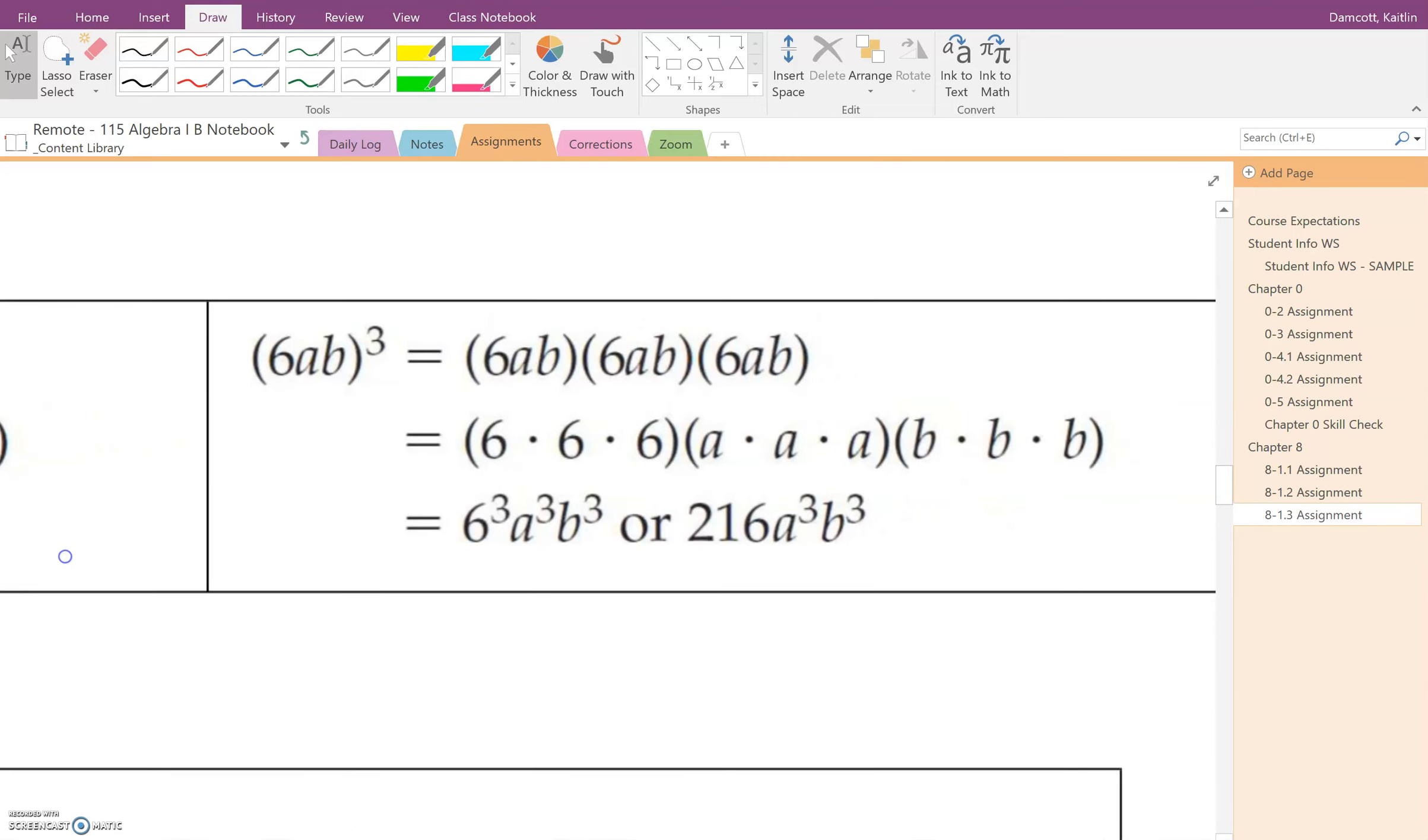So that's the first example. And the second example here, they have 6ab and we're raising that to the third power. So we need three factors of this 6ab. So we've got 6ab times 6ab times 6ab. And again, just like what we did yesterday's assignment, we changed the order.